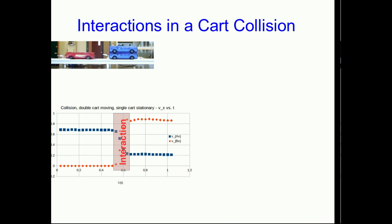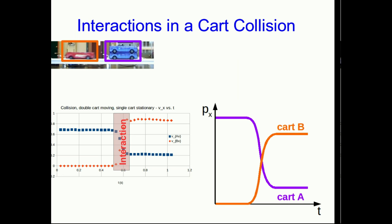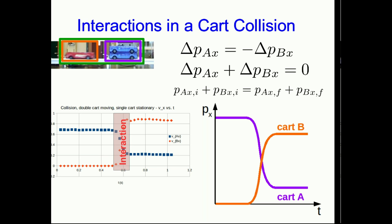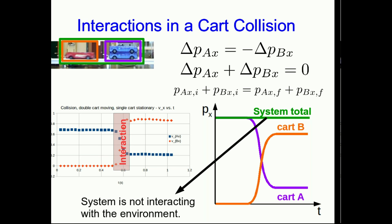Now let's think about, instead of the carts individually, think about the green box surrounding the system containing the two carts. Well, what our momentum equation is telling us is that the change in the momentum of this whole system is zero, or equivalently that the initial and final momentums of the system are the same. And so on the graph, the system total momentum is just a constant, and that makes sense because even though each individual cart is changing its momentum because of the interactions between the carts, the system is only interacting very weakly with the environment, and so its momentum is remaining roughly constant.